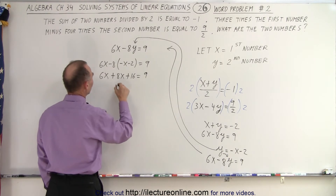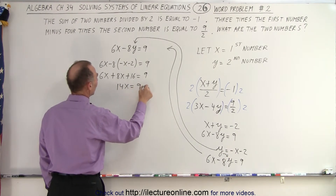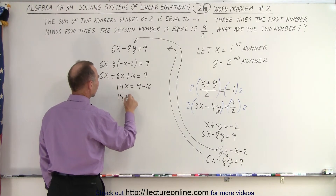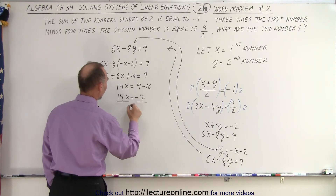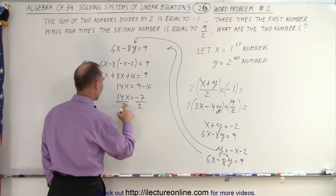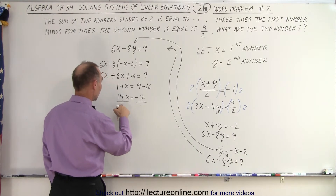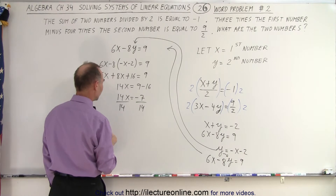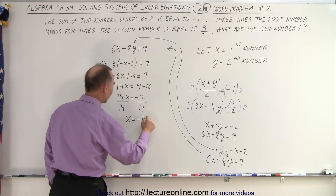Adding those together, we get 14x is equal to 9 minus 16. So we have 14x is equal to minus 7. Dividing both sides by 14 — the numerical coefficient of the variable — we have x is equal to minus one half.